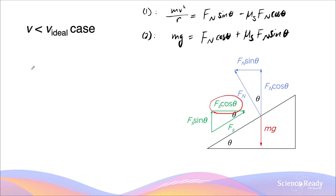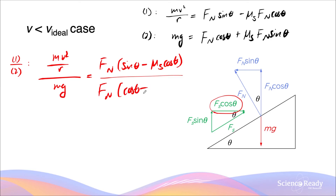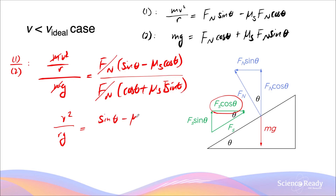Now I'm going to solve the two equations simultaneously by dividing equation 1 by equation 2. This gives mv²/r divided by mg on the left-hand side, and on the right-hand side: (Fn sinθ − μs·Fn cosθ) divided by (Fn cosθ + μs·Fn sinθ). Cancelling Fn throughout, we get v²/Rg = (sinθ − μs cosθ) / (cosθ + μs sinθ).